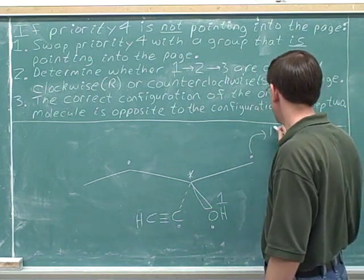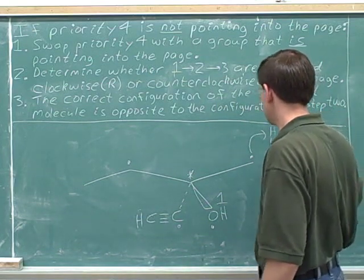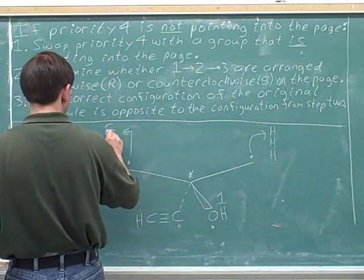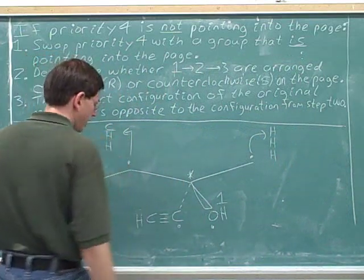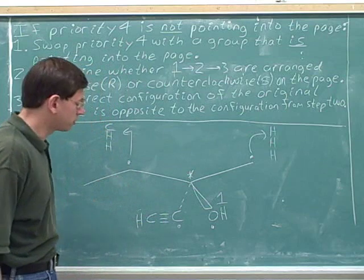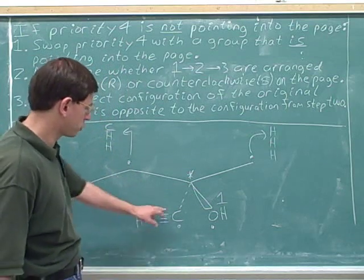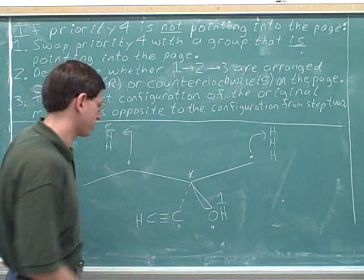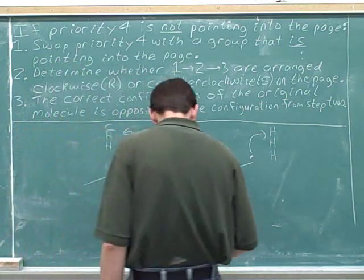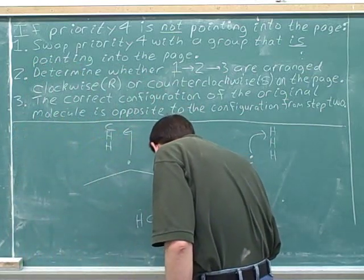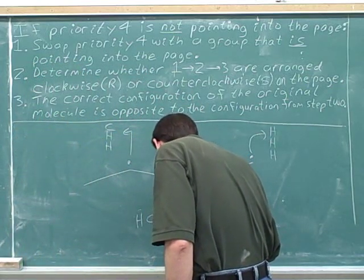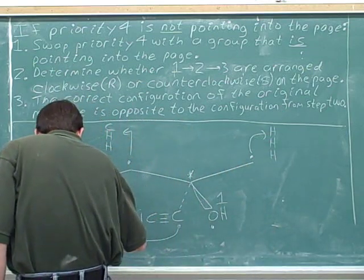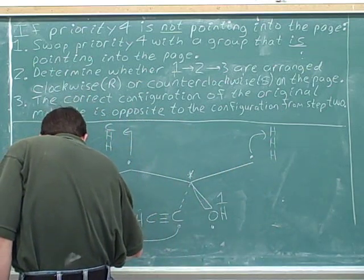This carbon is attached to three hidden hydrogens. The carbon on the left is attached to a carbon and two hidden hydrogens. And what about this carbon down here? We've learned what to do when you have a triple bond. This carbon we're going to treat as if it was bonded to three separate carbons: carbon, carbon, carbon.